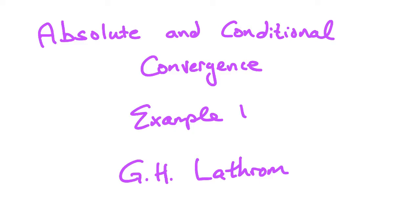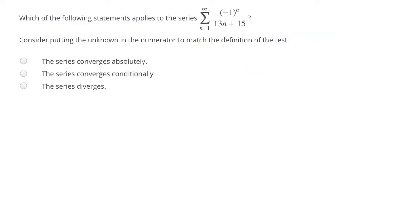Greetings, everybody. Let's take our first look at absolute and conditional convergence. In this problem, we're asked to determine whether the series converges absolutely, converges conditionally, or whether it diverges. To really understand this problem, we need to know what the definitions are for absolute and conditional convergence.